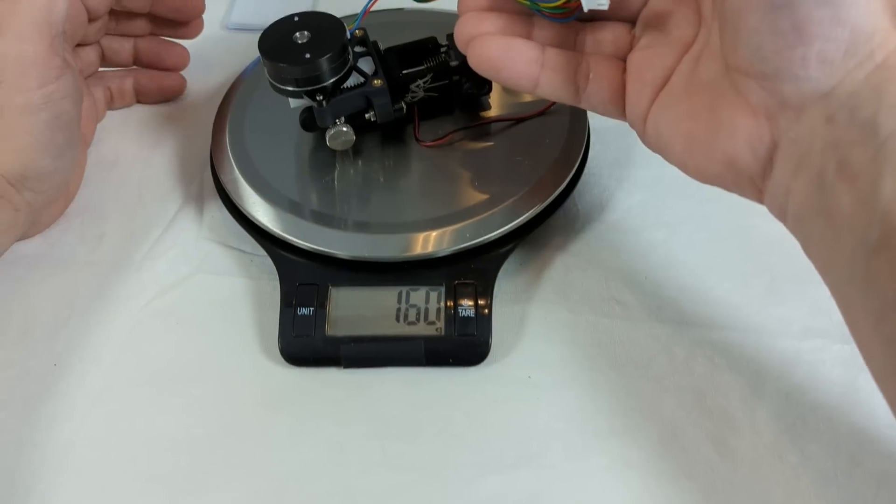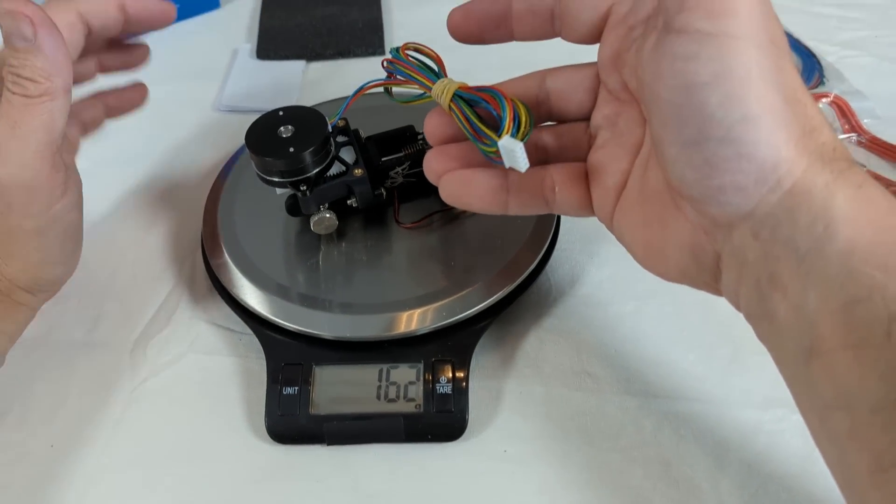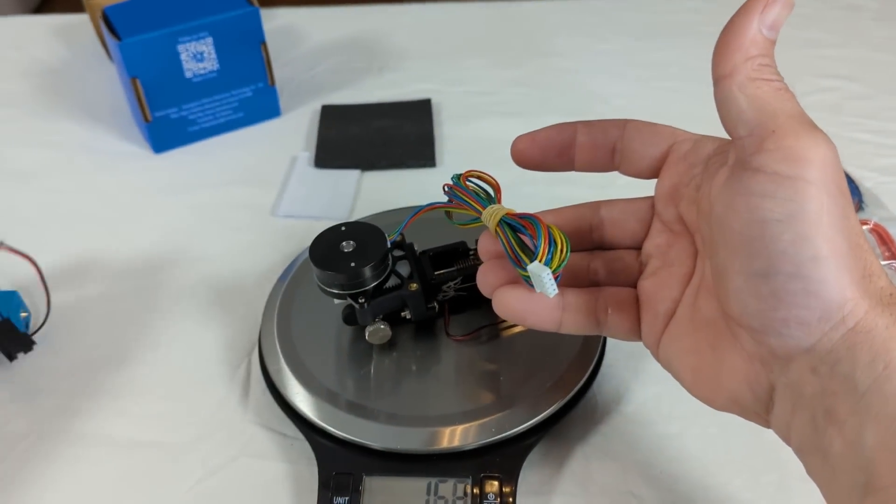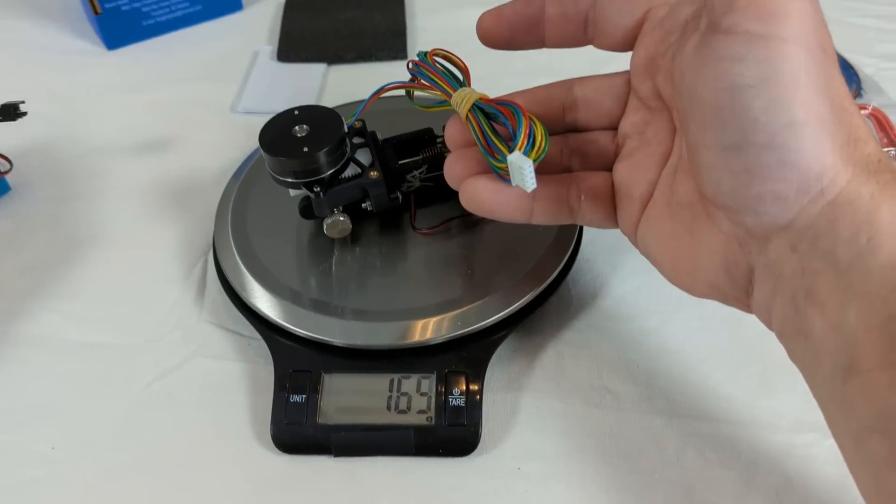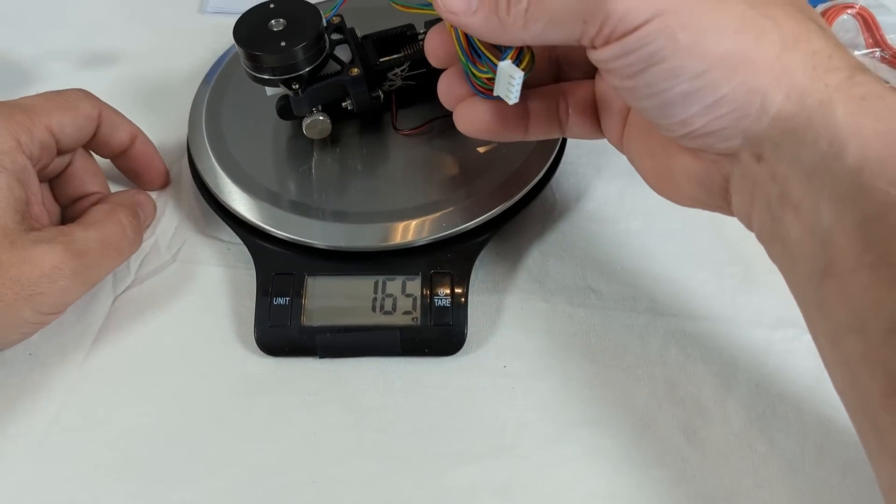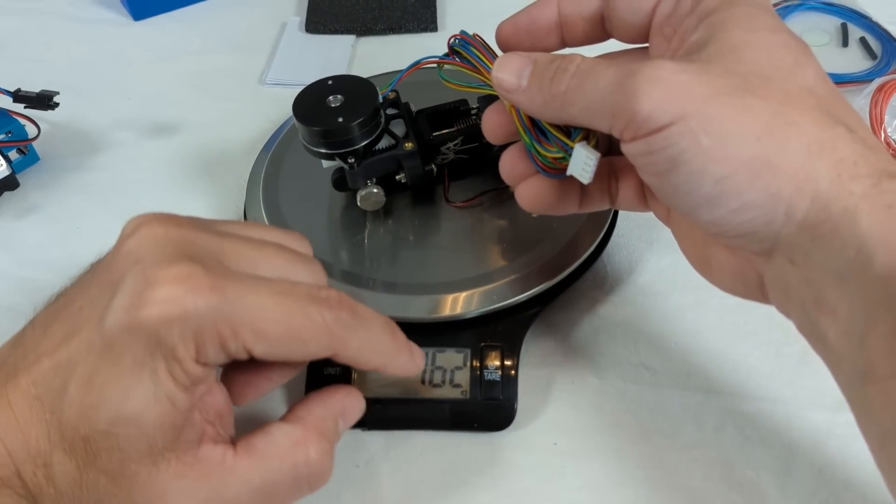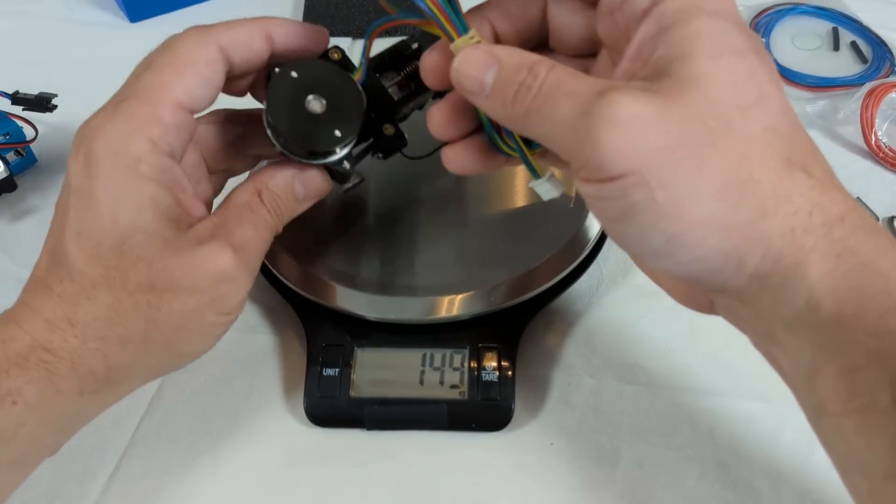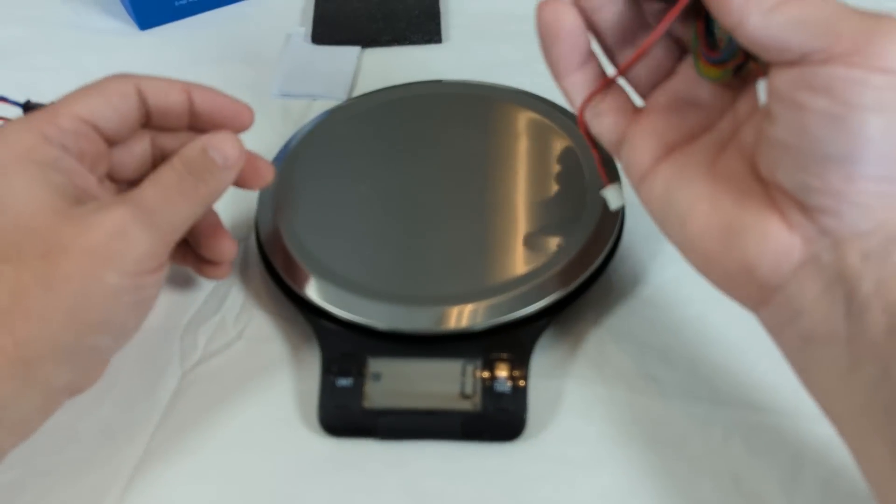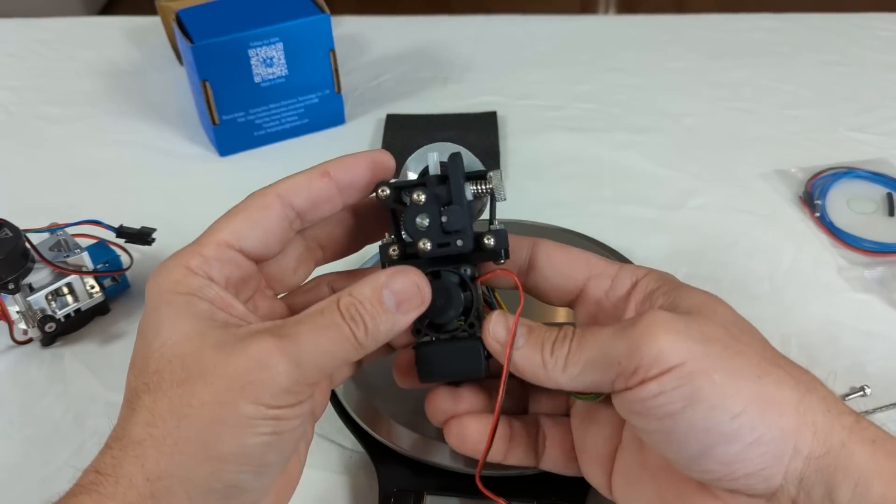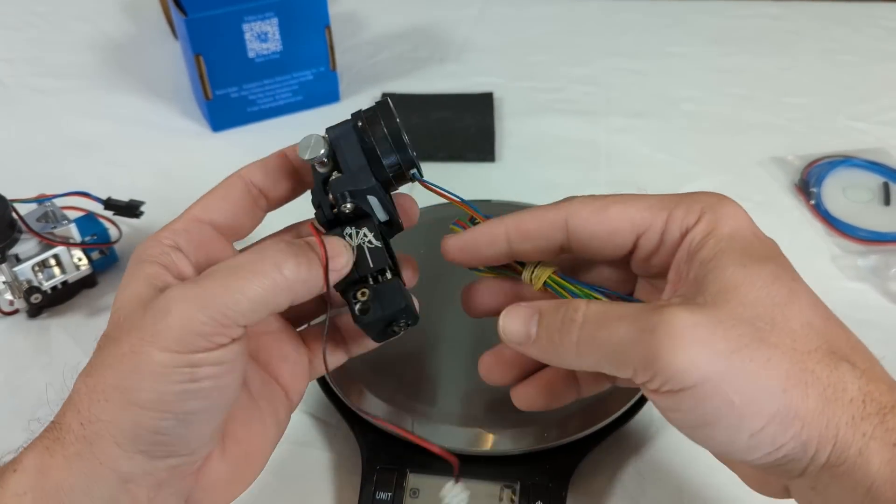In comparison, the Sherpa Mini here only weighs like 160 grams. I'm holding up the wiring here because this extruder doesn't have that big bundle of wires. So yeah, 165 grams. Wow, that's 40, 50, 60 grams lighter. That's going to be about 25% lighter. And that makes a big difference on the speed of your printing.